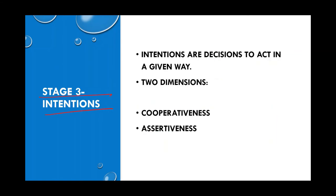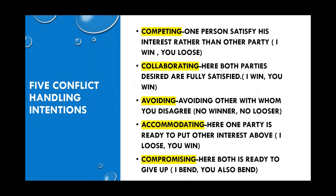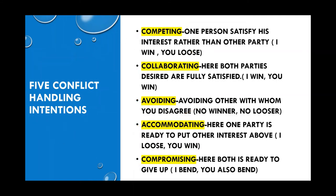Stage three is intentions. Intentions are the decisions to act in a given way. Intentions intervene between people's perceptions and emotions, which are usually displayed in the form of behavior. Using two dimensions — cooperativeness and assertiveness — we can classify into five different conflict-handling intentions. Cooperativeness is the degree to which one party attempts to satisfy the other party's interests, whereas assertiveness is the degree to which one party tries to satisfy his own interests. The five handling situations are: competing, collaborating, avoiding, accommodating, and compromising.